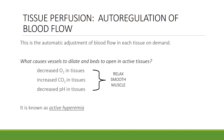The auto-regulation of blood flow is the automatic adjustment of blood flow in each tissue on demand — as a tissue needs oxygen, it regulates the flow of blood. Three factors cause vessels to dilate and capillary beds to open in active tissues: a decrease in oxygen in the tissues, an increase in carbon dioxide in the tissues, and a decrease in pH in the tissues. All of these relax smooth muscle, opening the valve to allow blood into tissues that need oxygen. This process is known as active hyperemia.